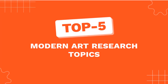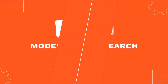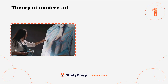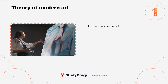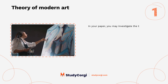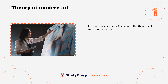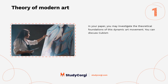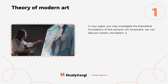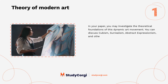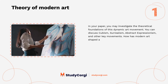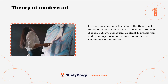Top five modern art research topics. In your paper on the theory of modern art, you may investigate the theoretical foundations of this dynamic art movement. You can discuss cubism, surrealism, abstract expressionism, and other key movements. How has modern art shaped and reflected the cultural landscape?